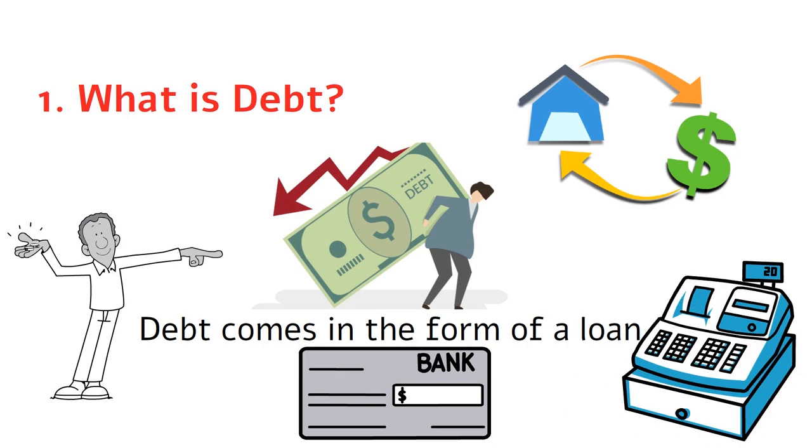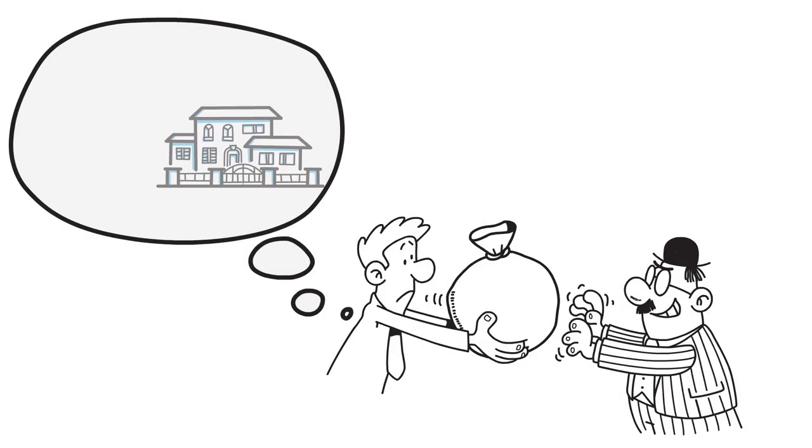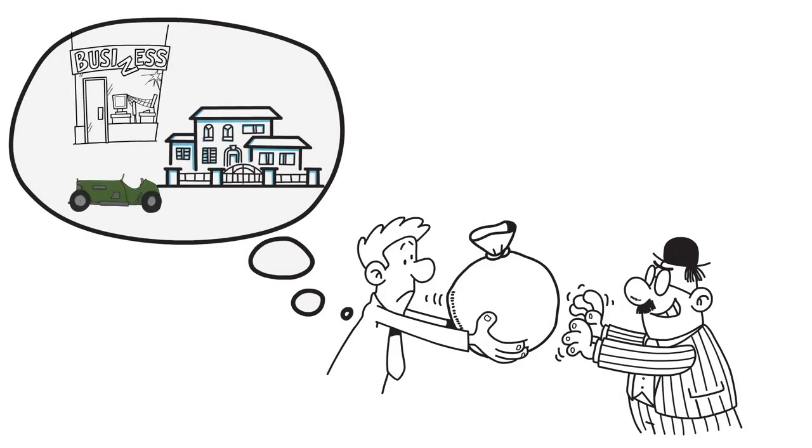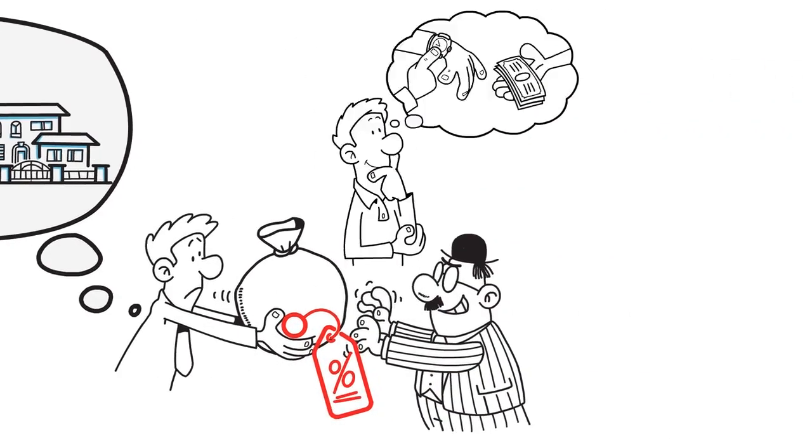Debt is typically incurred when a borrower needs to borrow money to pay for something, such as a house, a car, or a business venture. The borrower is then required to pay back the loan, plus interest to the creditor over a specified period of time.